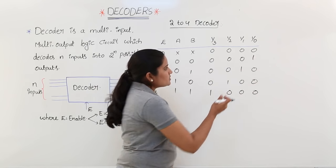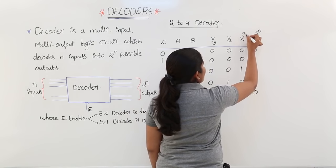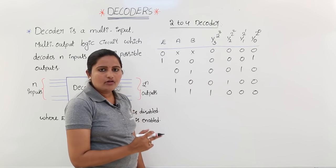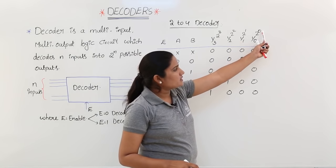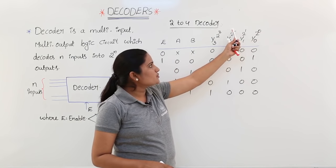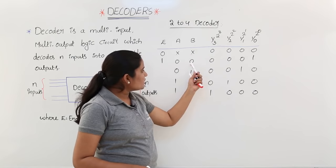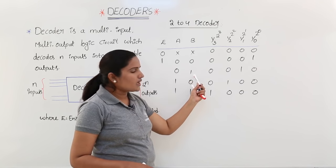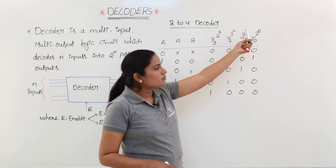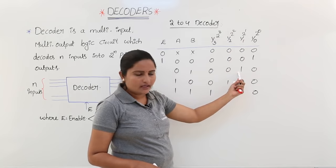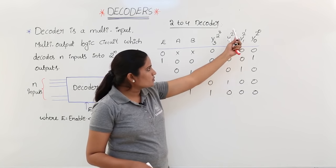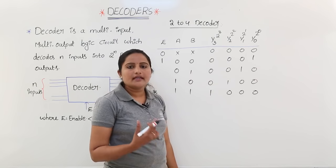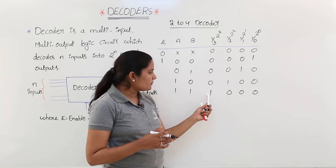The reason 1s are placed at those positions: this is the 2 power 0 place, 2 power 1 place, 2 squared place, and 2 cubed place. If n is equal to 0, it decodes to 2 power 0. If n equals 1, it decodes to 2 power 1. If n equals 2, it decodes to 2 squared place, and if n equals 3, it enables the 2 cubed place. This is the theory behind how we place 1s in a decoder.